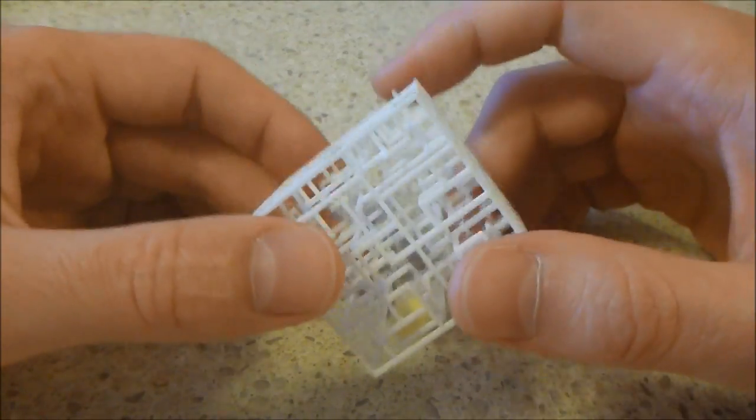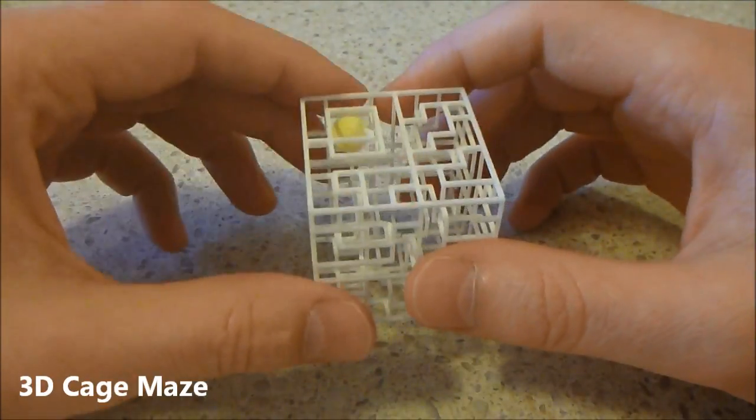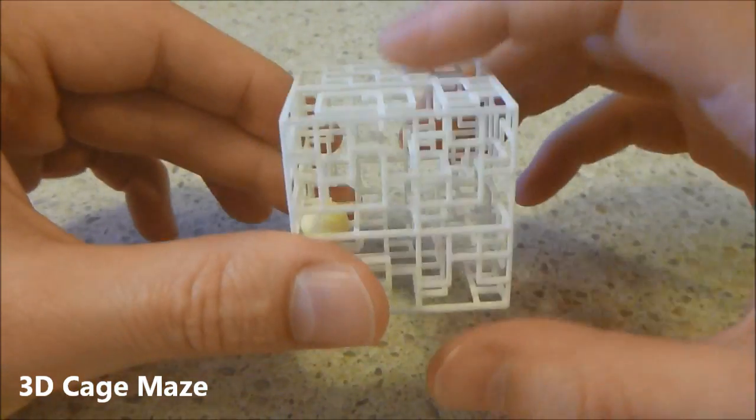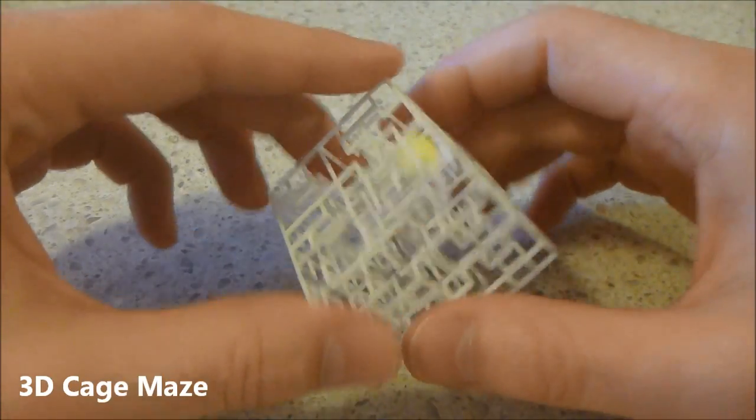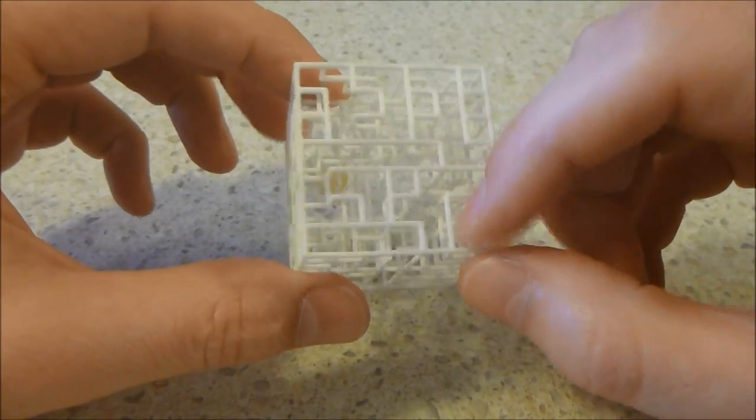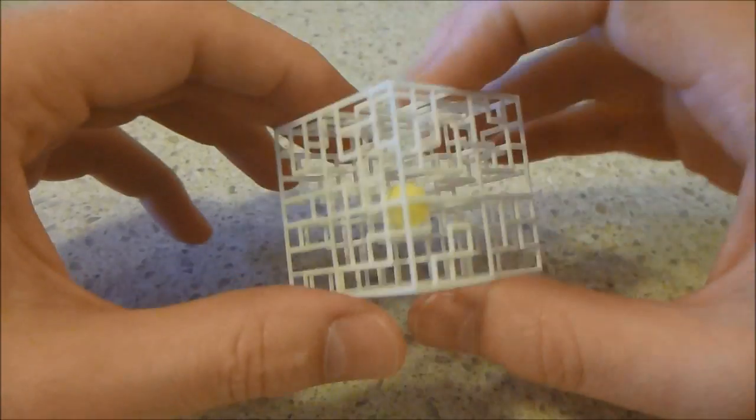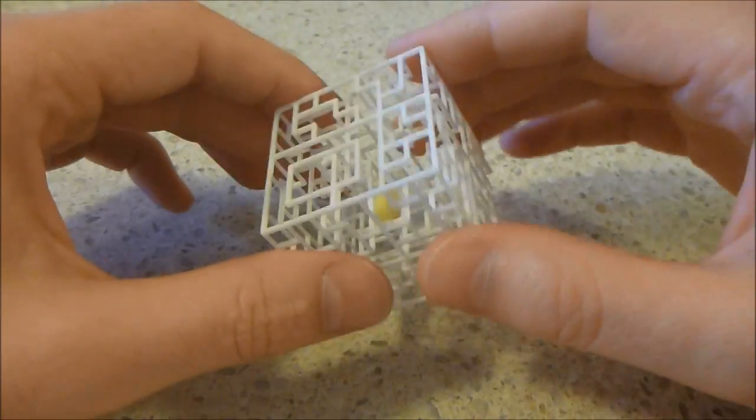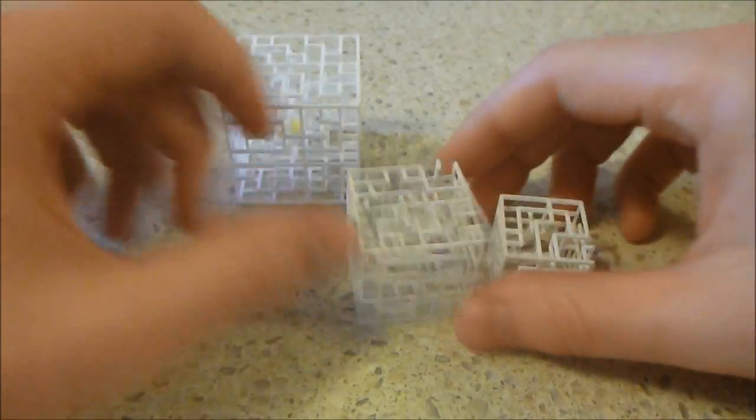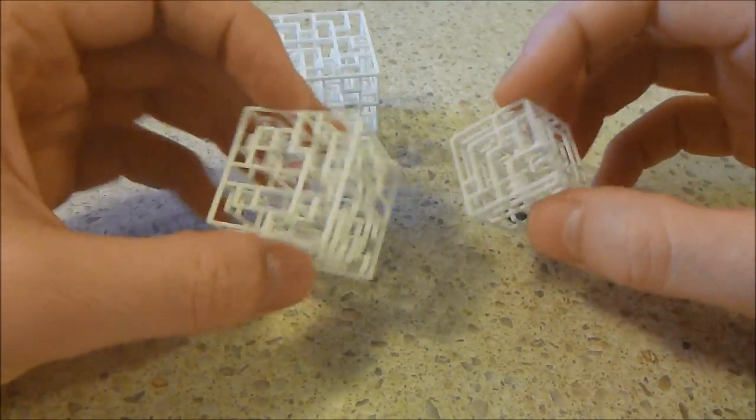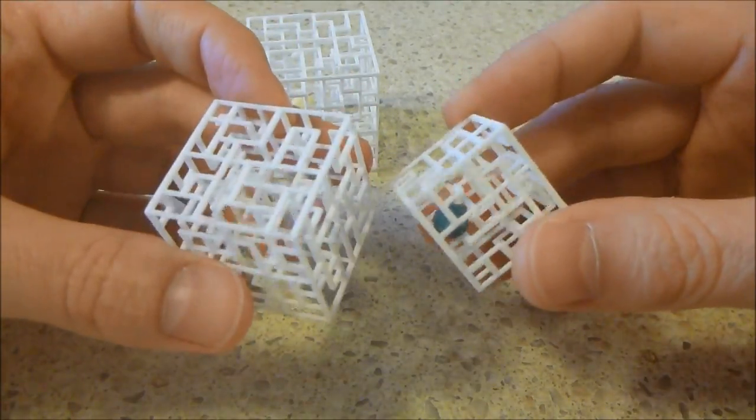Also have these 3D printed mazes. So, this little point here is the start of the maze, and then the object is to roll that little ball out through the exit, which is in this corner here. And you've just got to try and move that around until you can find the pathway out. It also comes with these smaller ones as well. They basically work by the same principle, but the smaller ones are a bit easier.